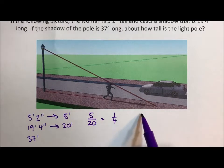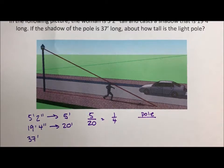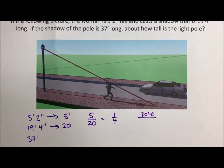The height of the pole to the shadow—well, the shadow is 37 feet, and right now we have a ratio of one to four. But four doesn't go into 37 easily. You know what's easier than 37? 36.